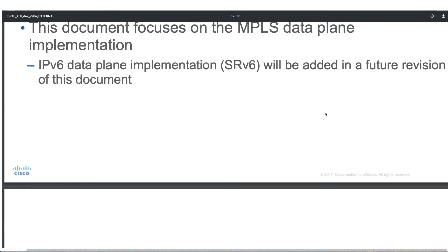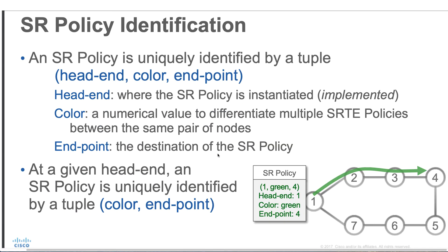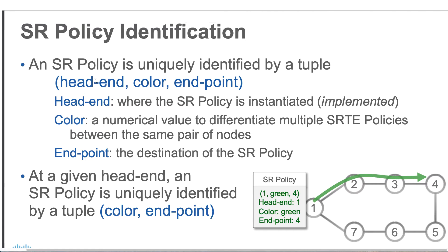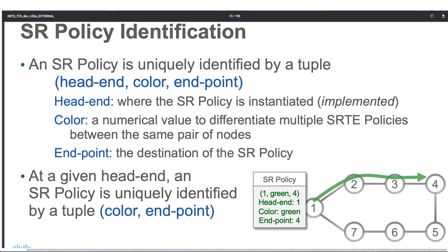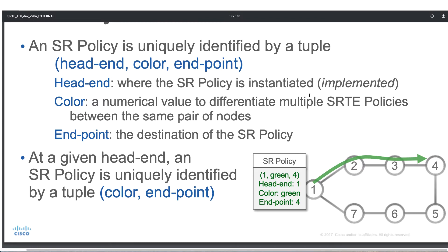To do any kind of traffic engineering with segment routing — whether MPLS or SRv6 — we need to create what are called SR policies. An SR policy is uniquely identified by a tuple consisting of three things: a headend, a color, and an endpoint. These three elements together uniquely identify an SR policy.